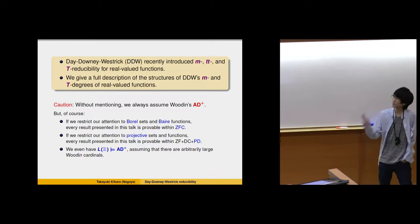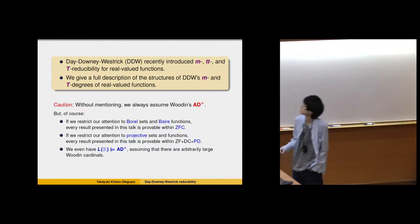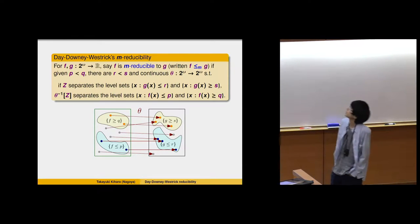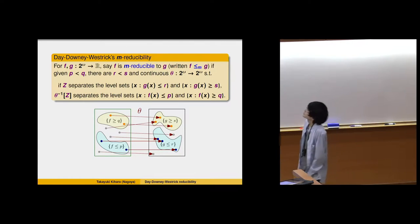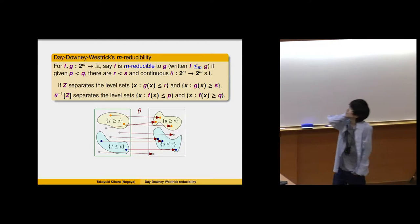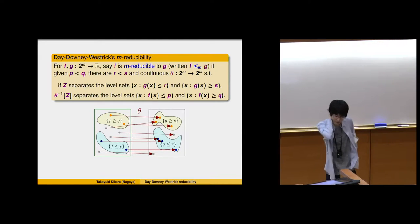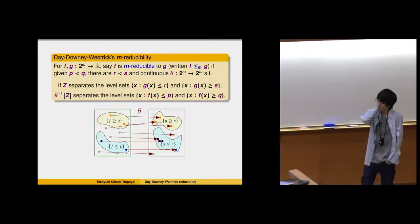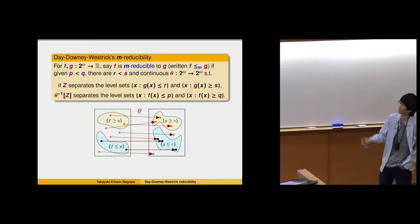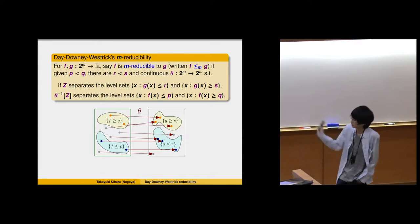I begin with giving the definition of many-one reducibility for real-valued functions, originally introduced by Dainy and Westerick. This basically estimates how difficult it is to separate the level sets of a given function. This definition is slightly different from the original definition, but actually it is equivalent to the original definition.